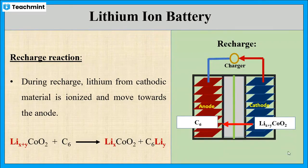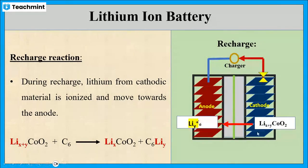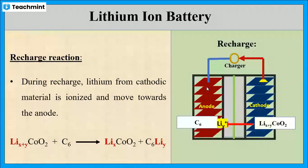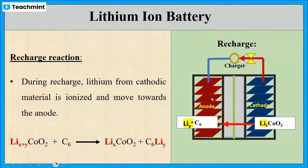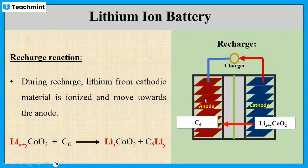On ionization, out of X plus Y lithium ions, Y number of lithium ions will move towards the anode and combine with graphite to form C6LiY. The liberated electrons move through the external circuit to form electrical energy. At the graphite electrode, the lithium ions are reduced to lithium atoms and are inserted back into the layers of graphite. When all the lithium ions have moved from cathode to anode and are stored in the layers of graphite, the battery is fully charged and ready to use.